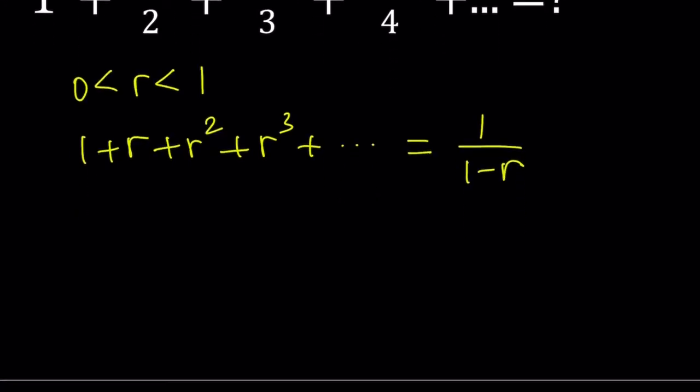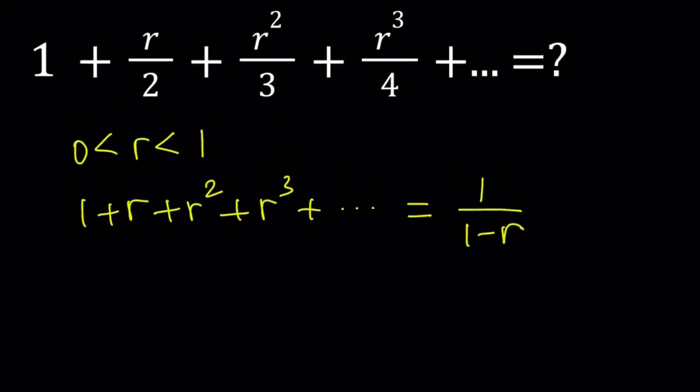So how can I get the expression that I want from an expression like this? For example, one of the techniques that we used earlier was differentiating, right? If you differentiate this, take the derivative, you're going to get 1 plus 2r plus 3r squared dot dot dot. But that's not good, because we kind of need division. We're dividing by 2 by 3 by 4. Here it's multiplication.